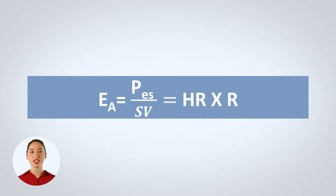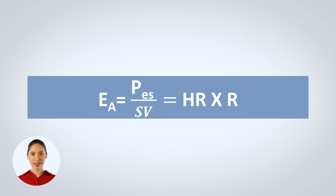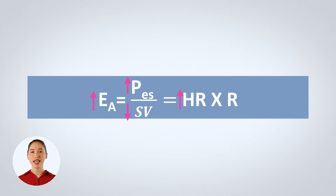Essentially, the three parts of the equation — arterial elastance on the left side, end systolic pressure divided by stroke volume in the middle, and heart rate multiplied by resistance on the right side — should all equate each other. That means if heart rate goes up, arterial elastance goes up, and the only way the three parts equate is by decreasing stroke volume or increasing end systolic pressure. That is why we say elastance is dependent on heart rate.